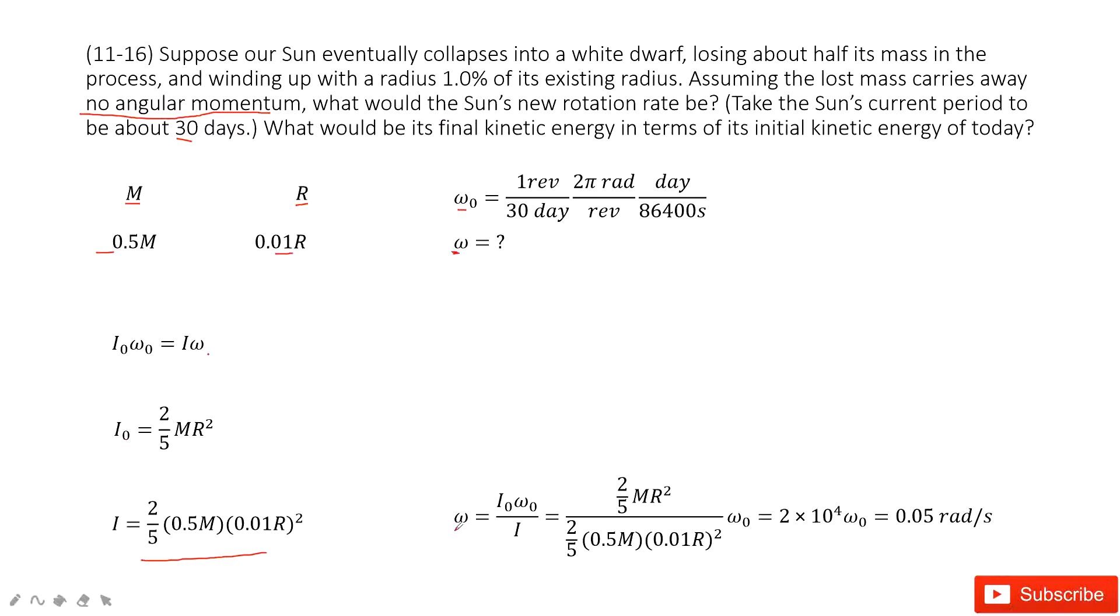Input all the given quantities, we get the final answer. This final angular velocity will be 2×10⁴ times ω₀. Input ω₀, get the final answer there.